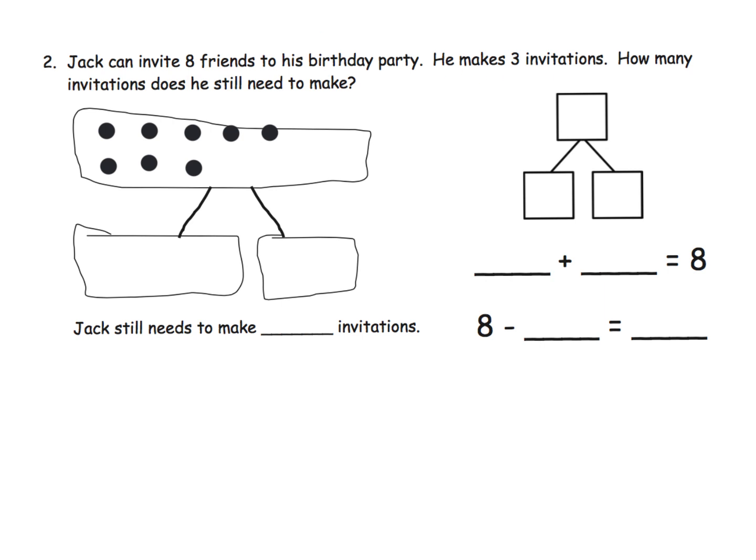He makes three invitations. One, two, three, I suppose. I'll do it over there. How many invitations does he still need to make? One, two, three, four, five. So there's our model.